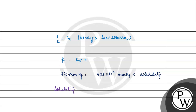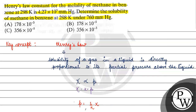Solubility comes out to be 760 divided by 4.27 × 10⁵. Dividing 760 by 4.27 gives approximately 1.78, so the answer is 1.78 × 10⁻³. Coming back to the question, the correct answer is option B. I hope you understood it well. Thank you.